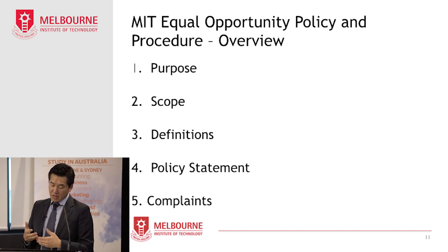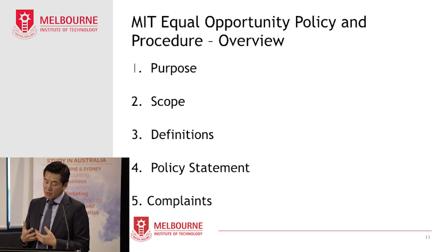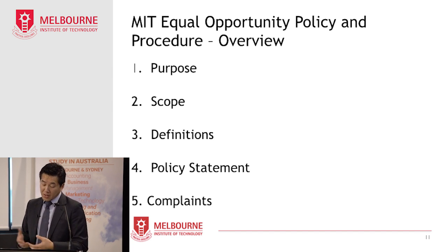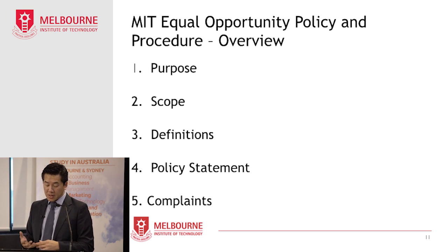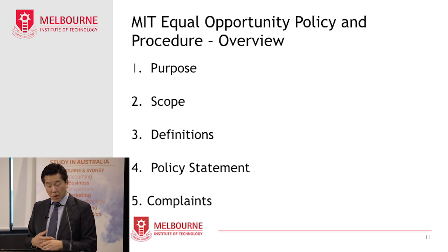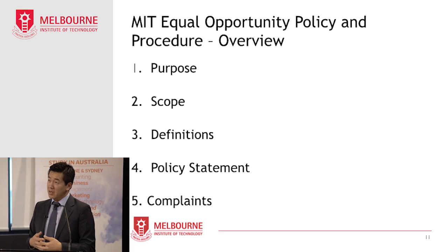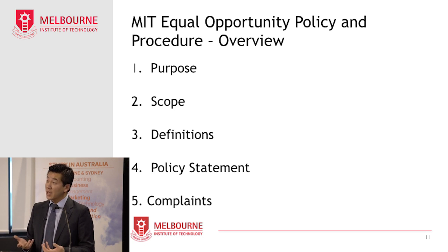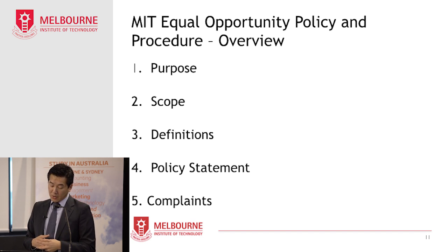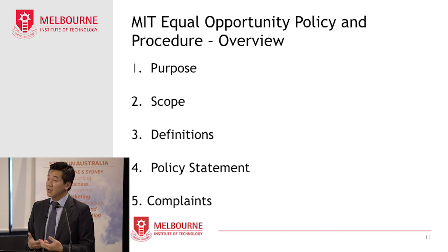Not only do you have rights at work to work in an environment free from discrimination, harassment and bullying, but you can also expect to have those rights in a study environment — that is, to study in an environment free from discrimination, harassment and bullying. At MIT, we've got a detailed policy to address this area, which is the MIT Equal Opportunity Policy and Procedure. The policy is published on the Institute's website and it's very important that you read through it carefully so you understand what's considered to be unlawful discrimination, harassment, sexual harassment, bullying, victimisation and so on. It also helps you know how to make a complaint and how MIT deals with complaints concerning these matters.